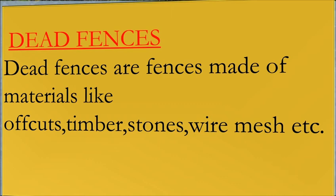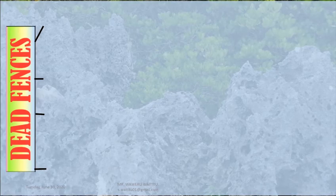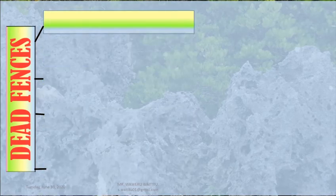The first question we shall ask ourselves is: what are dead fences? We define dead fences as fences that are made of materials like offcuts, timber, stones, wire mesh, etc. Dead fences are divided into four types.